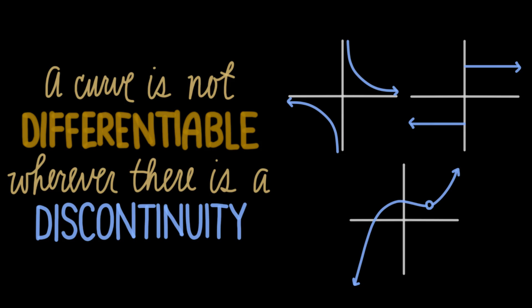So a curve is not differentiable wherever there's a discontinuity, such as a vertical asymptote, a hole, or a jump.